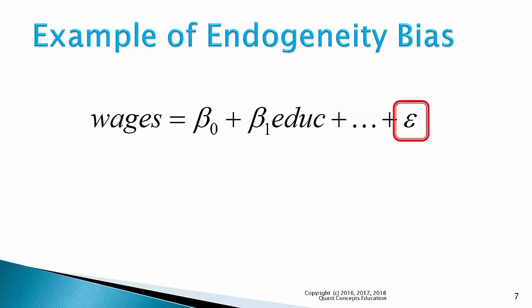Recall that the error term contains all other factors that impact wages that haven't been included in the model — so all factors apart from education, experience, IQ, gender, etc. Now, suppose there is an omitted variable, called A, and it is contained in the error term. An omitted variable is one that should be included in the model as an X variable, but it isn't for some reason. Perhaps the data is missing or impossible to quantify. As such, it's not included as an X variable, but instead is contained in the error term.